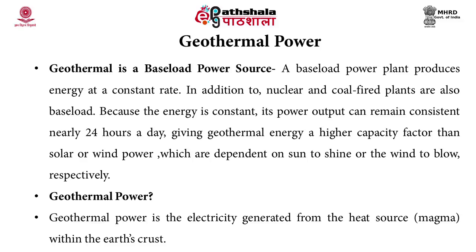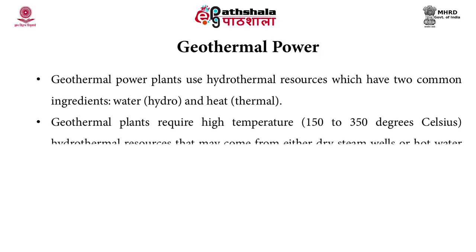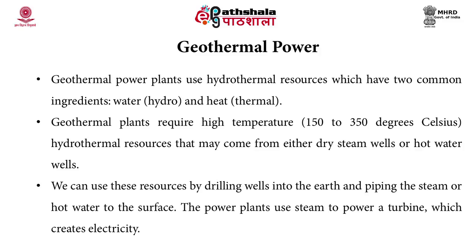Geothermal power is the electricity generated from the heat source, that is the magma within the earth's crust. Geothermal power plants use hydrothermal sources, which have two common ingredients: water (hydro) and heat (thermal). Geothermal plants require high-temperature hydrothermal resources that may come from either dry steam wells or hot water wells. We can use these resources by drilling wells into the earth and piping the steam or hot water to the surface. The power plants use steam to power a turbine, which creates electricity.